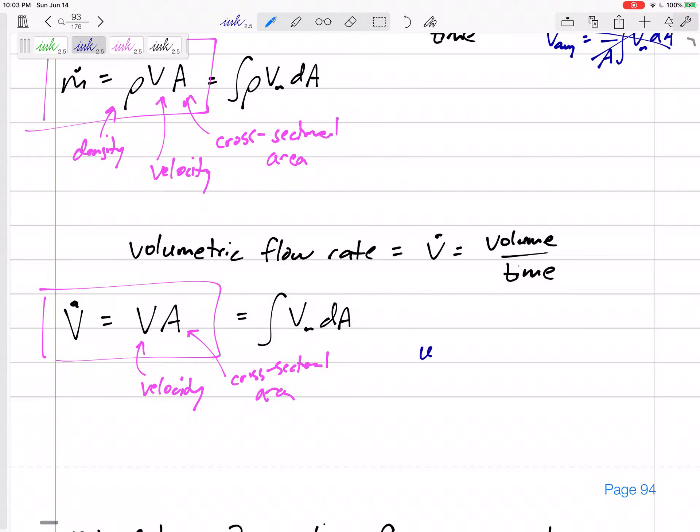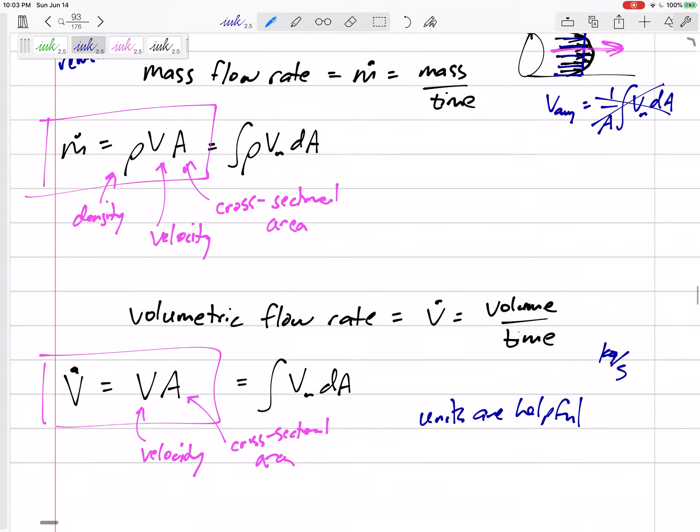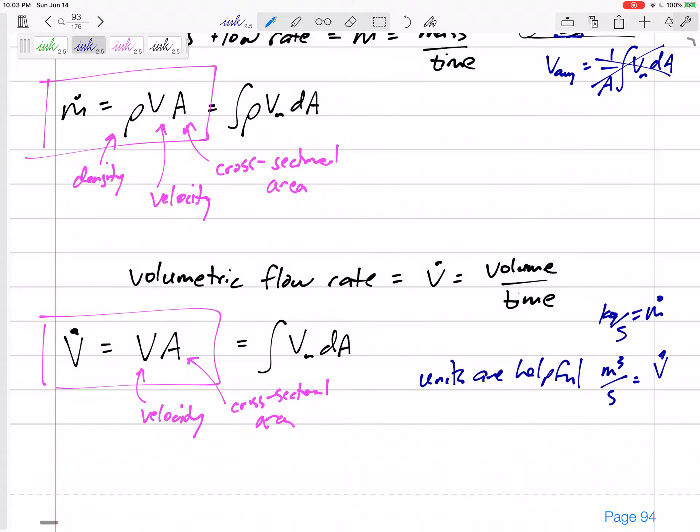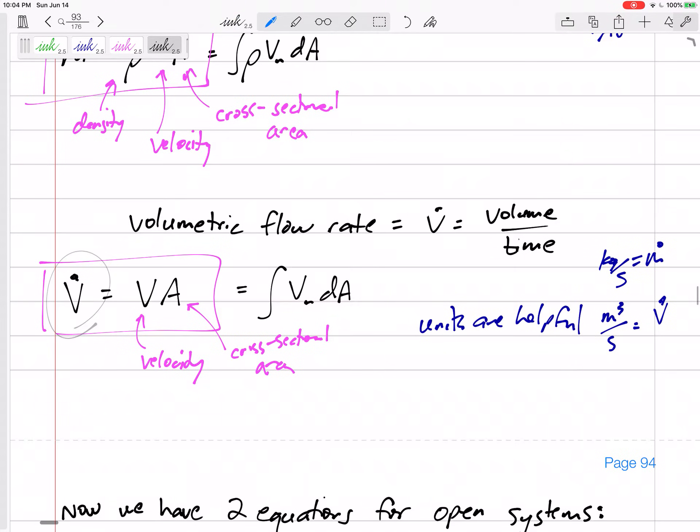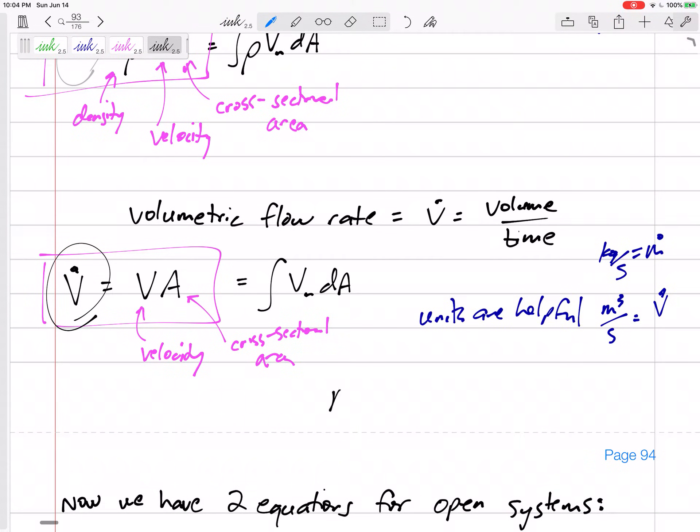Units are helpful. If we've got kilograms per second, that's m dot. If we've got something like meters cubed per second, that's v dot, volumetric flow rate. And then to kind of switch between the two, maybe you're given volumetric flow rate, but you really want mass flow rate. Mass flow rate equals rho v dot. And again, the units would have given that away to you. How about v dot over specific volume? m dot is also v dot over specific volume. So anyway, there's some ways to calculate the mass flow rate.